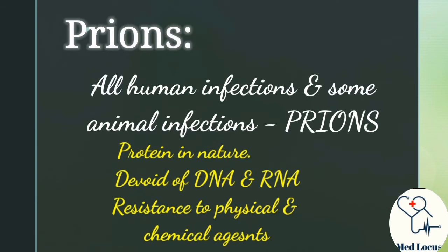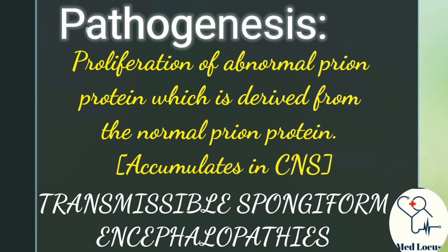All the slow virus infections of humans and some animal infections are due to prions. Prions are unique in being protein in nature, devoid of DNA and RNA, and also resistant to physical and chemical agents. The pathogenic mechanism seems to be proliferation of an abnormal prion protein derived from the normal prion protein. The accumulation of abnormal prion protein in the central nervous system disrupts the architecture and function of the brain.